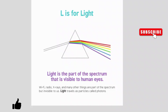L is for light. Light is the part of the spectrum that is visible to human eyes. Wifi, radio, x-rays, and many other things are part of the spectrum, but invisible to us. Light travels as particles called photons.